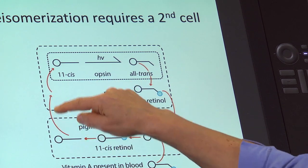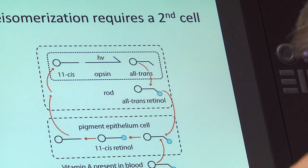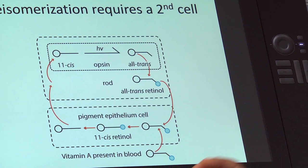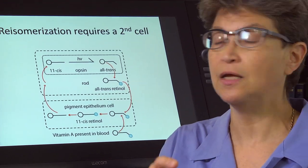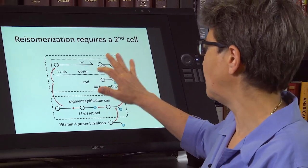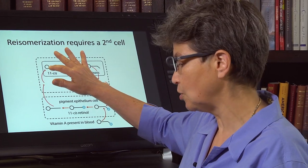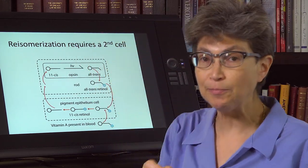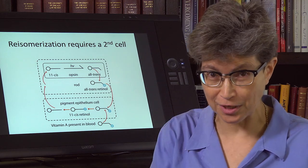And each one of these steps includes a transporter. So what you can see here is that there's a ton of molecules involved in the production of 11-cis retinol that is able to absorb a photon.